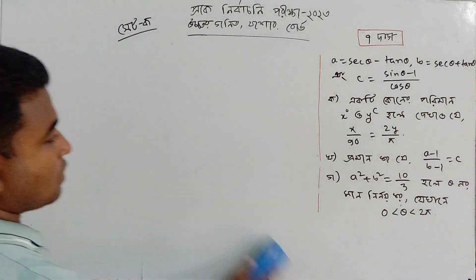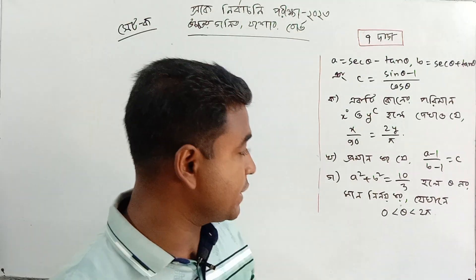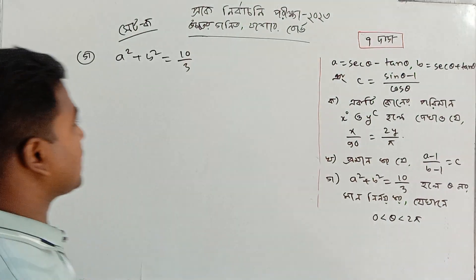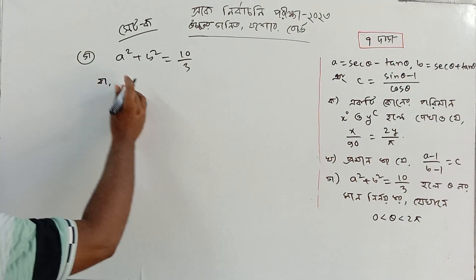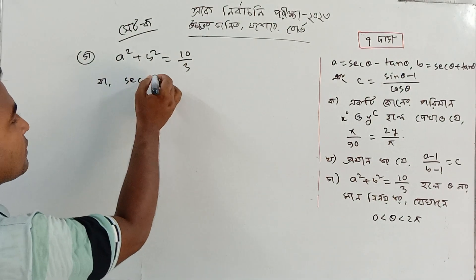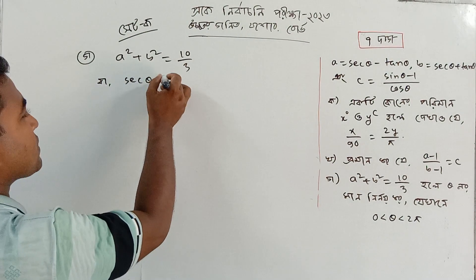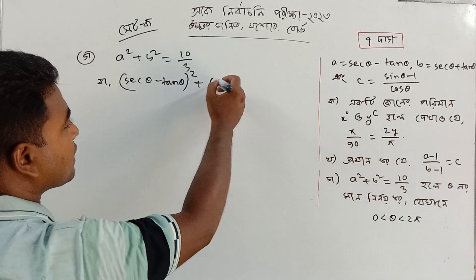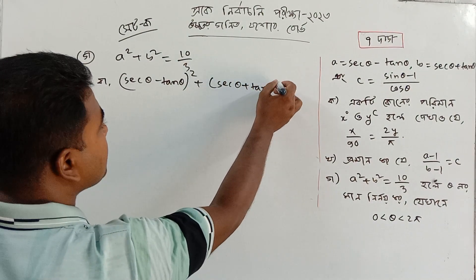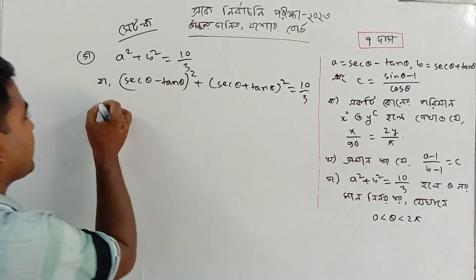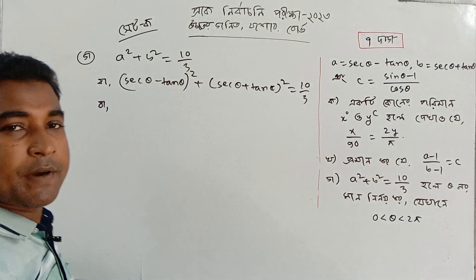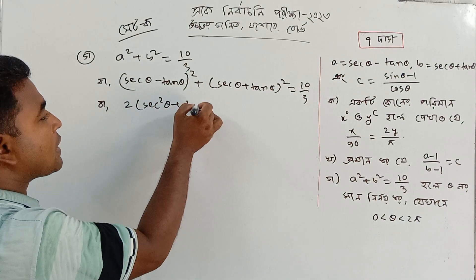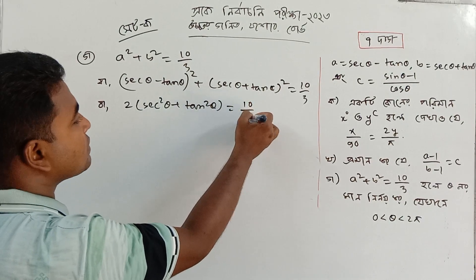The expression is equal to 10 by 3, with the range 0 less than theta less than 2 pi. Take a look: 3 times — sec theta minus tan theta of a theta squared, plus sec theta plus tan theta — is equal to 10 by 3. So 2 into a squared plus b squared equals 10 by 3.